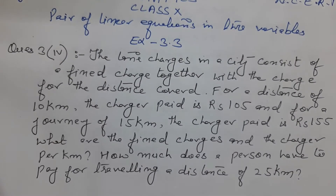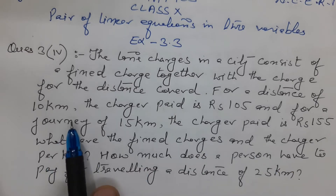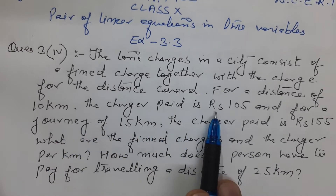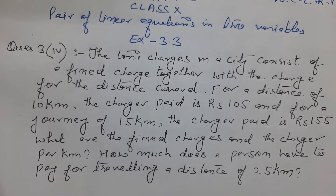Students, taxi charges in the city consist of two components: one fixed charge and one charge per km. If the distance is 10 km, the charge paid is 105 rupees. If the distance is 15 km, the charge is 155 rupees. We need to find the fixed charge and the charge per km. Also, how much does a person have to pay for traveling a distance of 25 km?